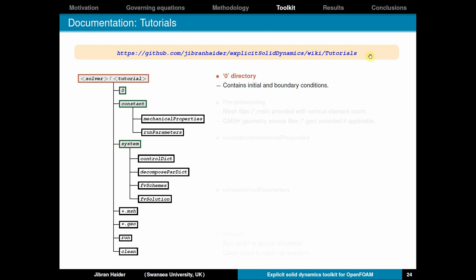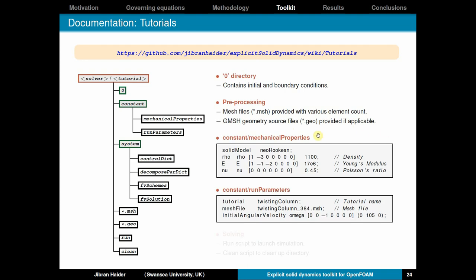which is very similar to the existing OpenFOAM tutorials. You have the zero directory with initial boundary conditions, the constant directory, where you have mechanical properties, run parameters, and then the tutorials are provided with mesh files with element counts. And sometimes the dot geo file geometry file is also provided if you want to make some changes in the geometry. In the constant directory, you have the mechanical properties such as density, Young's modulus, Poisson's ratio, and in the run parameters file, there are some information relevant to the test case you are solving. In order to solve it, you just need to run the script to launch the simulation. And when you want to clean it, you can use the clean script and prepare for a fresh run.